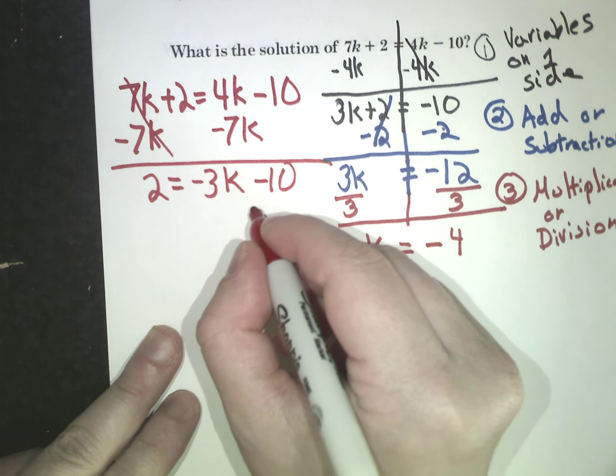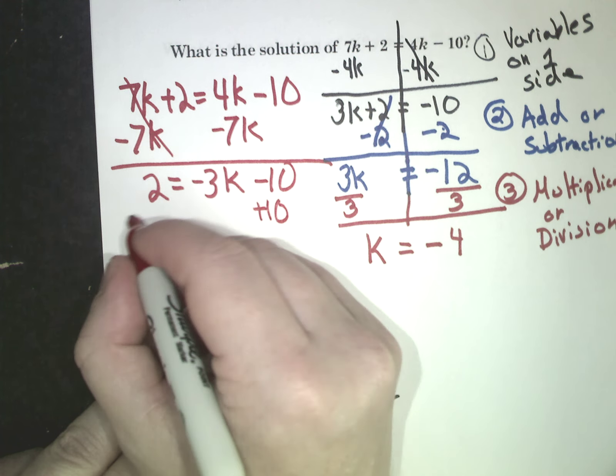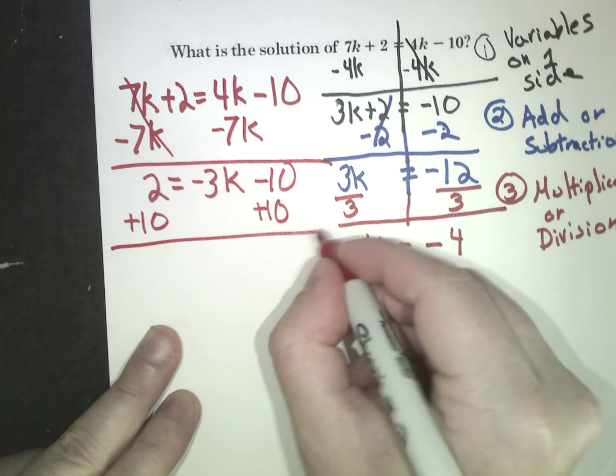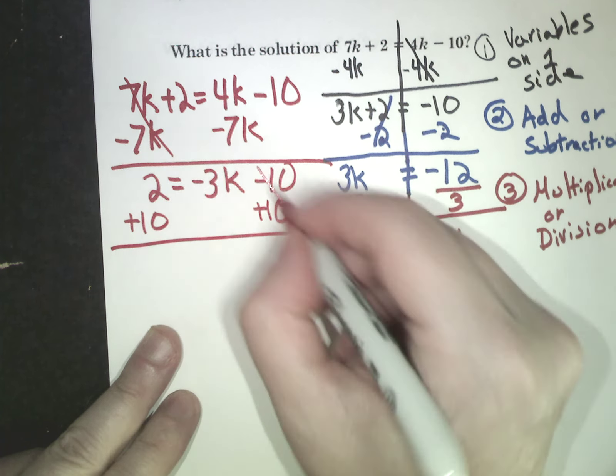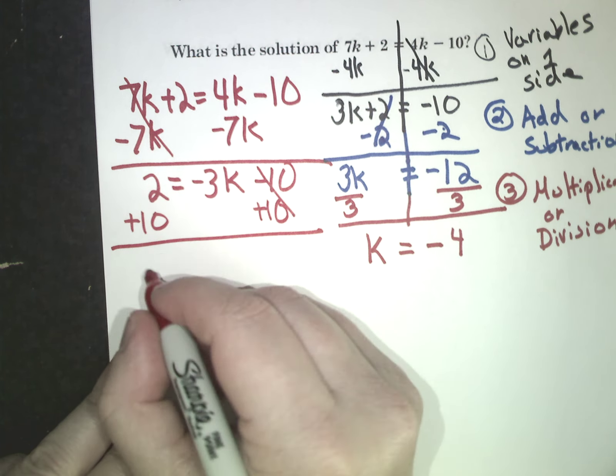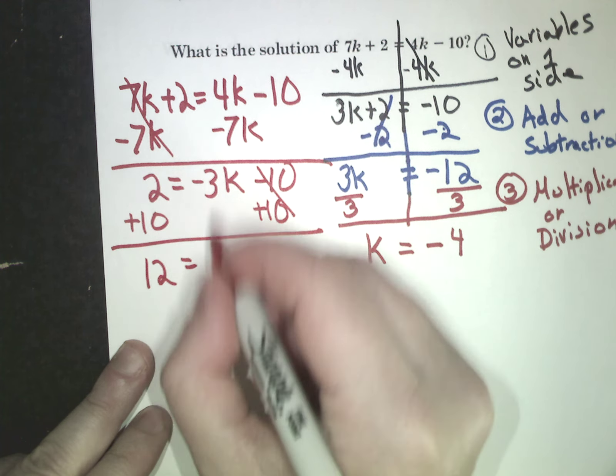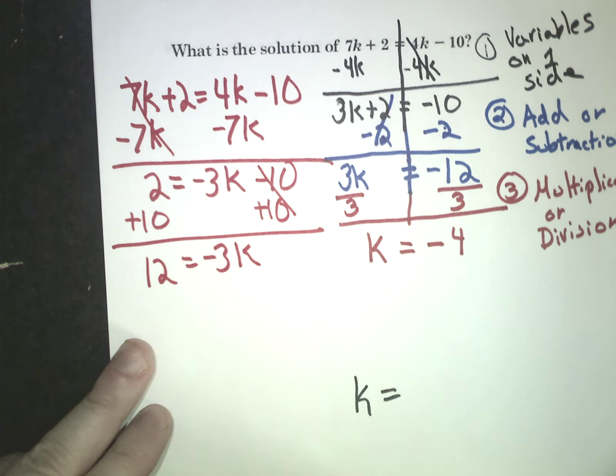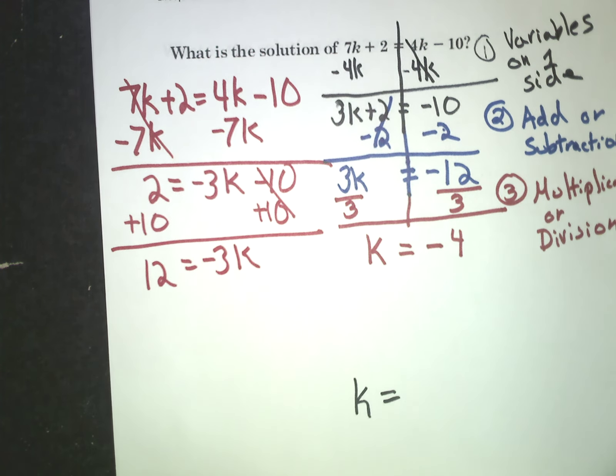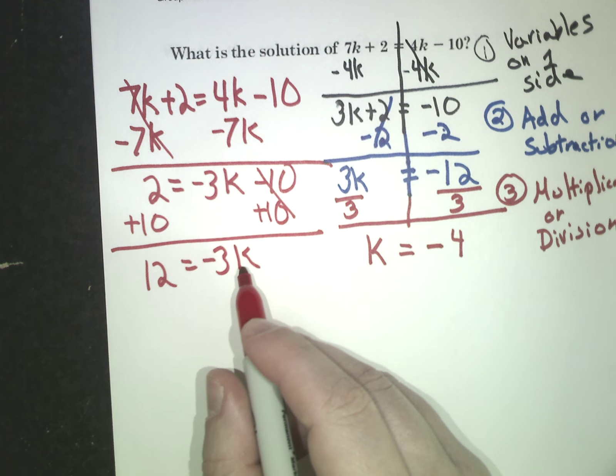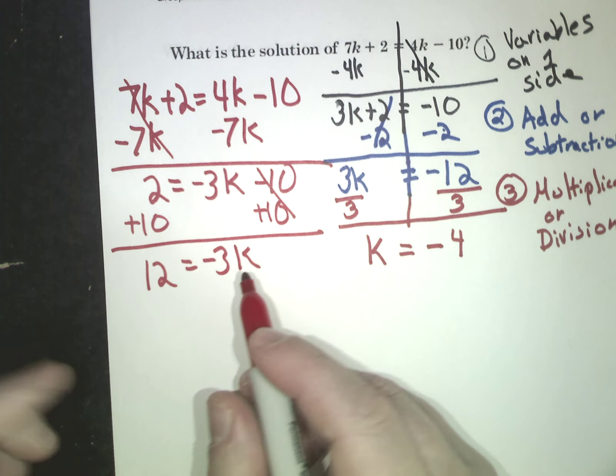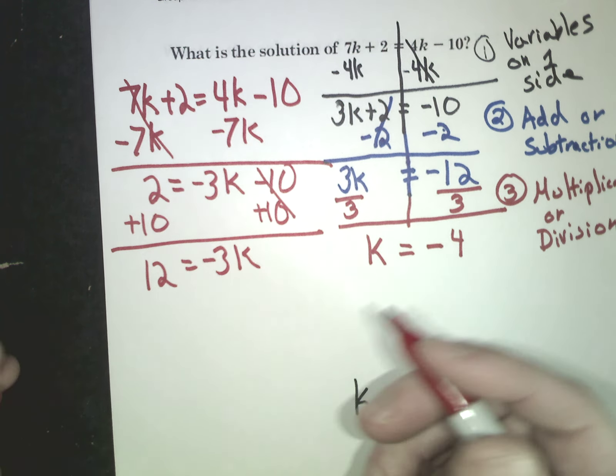Then I'm going to have to do addition, right? So I add 10. Add 10 here. Step 2. That's gone. 2 plus 10 is 12 equals negative 3k. Now, sometimes, if this isn't a positive number, if this is a negative k, I still have to do another division.